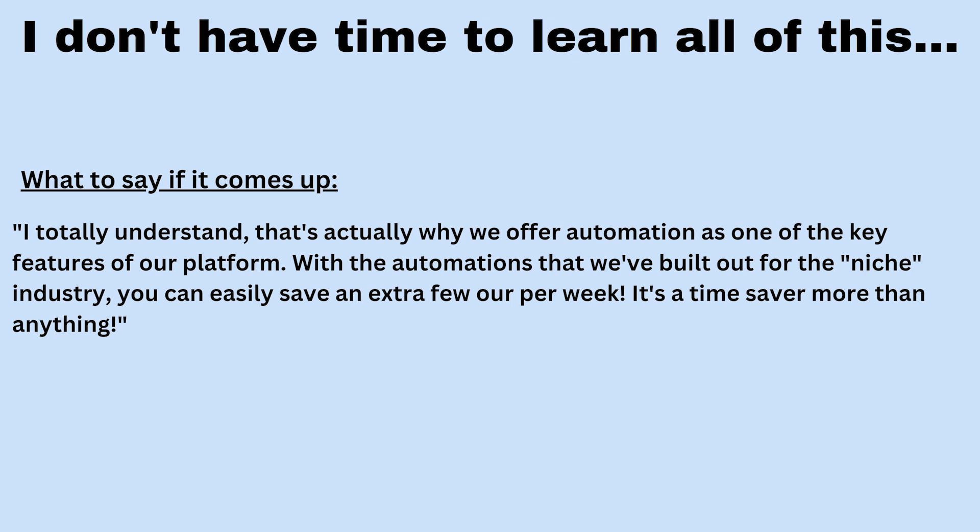The fifth objection is: I don't have time to learn all of this. After showing people the software, a lot of them say it's overwhelming and they don't have the time to learn it. What you can say is: I totally understand — that's actually why we offer automation as one of our key features. With the automations we've built out for the real estate industry, you can easily save an extra few hours per week. It's a time saver more than anything. There's a little bit of a learning curve up front, but we've pretty much set it up for you. You really don't have to do much other than respond to your leads as they come in — it's a lead generation machine with automated features that help you save time in your business.